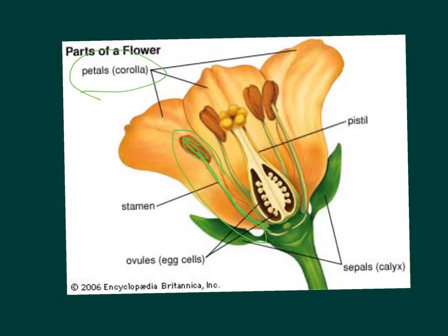The female part of the plant is called the pistil, and that's right here. At the top we have the stigma, then we have the style. We have the ovary, and then inside the ovary we have the ovules.